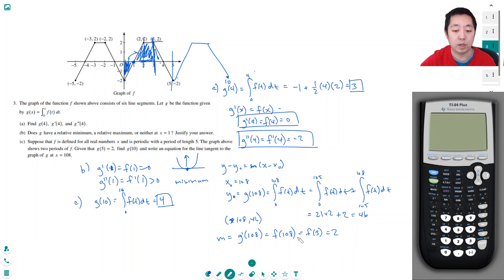g prime at 108 is equal to 2. So then I have y minus 44 is equal to 2 times x minus 108.